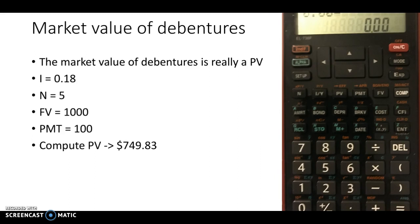Well, the market value of debentures or bonds is really a present value. So we've got here my mock-up of a calculator. So 0.18 goes into the interest. Five goes into N. The future value, so 1,000 goes into future value. The payment is 100, so 100 goes into payment. And then we need to compute the present value, which will give us a price of $749.83. Remember that you needed to clear your memories first, which is the second alpha, zero, and then another zero.